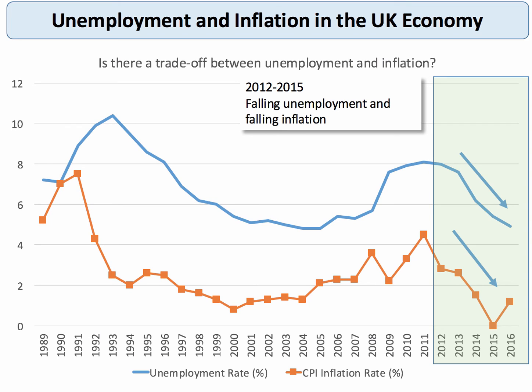In more recent times the data has moved more favourably for the UK. Indeed, from 2012 through to 2015, both unemployment and inflation fell significantly. The rate of unemployment is now below 5%, and inflation in the UK in 2015 was as close to zero as makes no difference — indeed the fear there was deflation. Inflation picked up to above 1% in 2016 and is likely to rise further, but it's still below the 2% target.